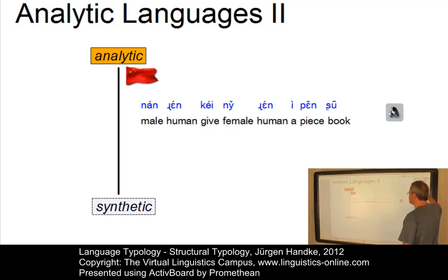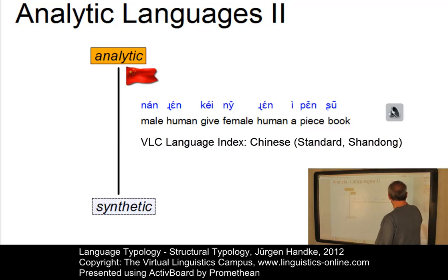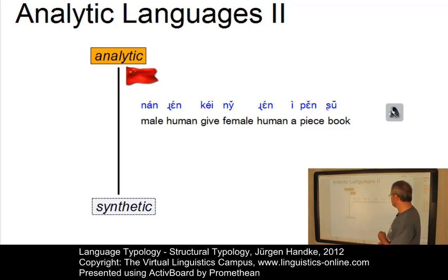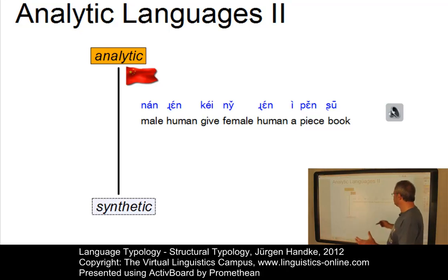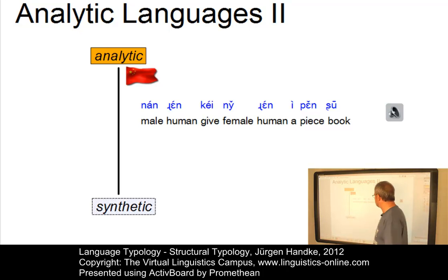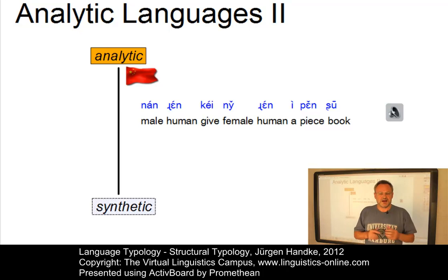Here is the same sentence in Chinese: '男人給女人一本書.' Again, we have syllables that stand for words, that stand for morphemes. You might want to argue that '男人' and '女人' are compounds, but we said earlier that word formation is not a criterion for the typological classification of languages. So clearly, Vietnamese and Chinese are analytic languages.